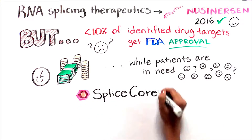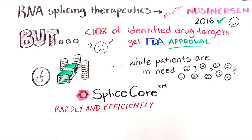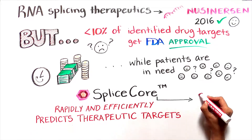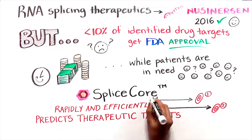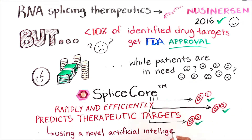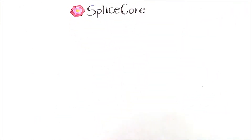Invisigenics' software platform SpliceCore rapidly and efficiently predicts therapeutic targets in RNA splicing diseases using artificial intelligence. Our platform utilizes a two-step approach for data analysis.